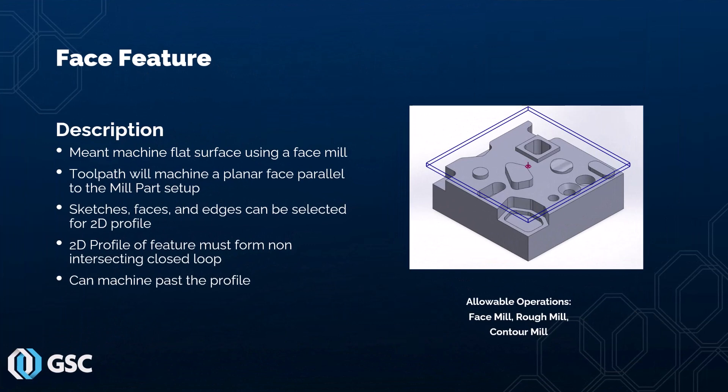The first 2.5-axis milling feature we'll learn how to define is the face feature. The face feature is meant to machine the top surface of your stock flat, most likely using a face mill. The toolpath will machine a planar face parallel to the mill part setup. You can select sketches, faces, and edges as the 2D profile. The 2D profile must form a non-intersecting closed loop, and your toolpath will be able to machine past the boundary of the profile. The allowable operations are face mill, rough mill, and contour mill.